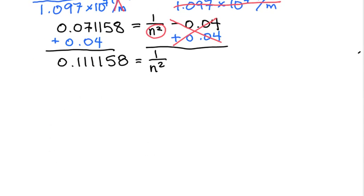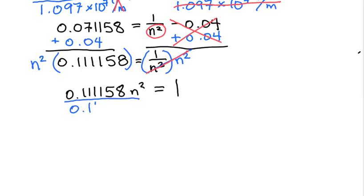Now this is very similar to what happens when you have 1 over the wavelength. Right now we have 1 over n squared, so what we're going to do is we're going to take both sides and multiply it by n squared to get it up out of that denominator and into the numerator. So it cancels on the right hand side. So we get 0.111158 n squared equals 1. And we divide both sides by 0.111158. We get n squared equals 9.